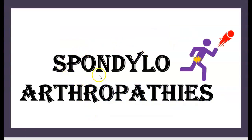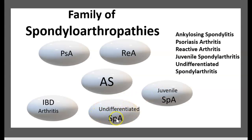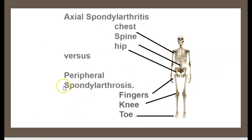Today's topic is spondyloarthropathies — a big family of conditions. Spondyloarthropathies include ankylosing spondylitis, psoriatic arthritis, reactive arthritis, juvenile spondyloarthritis, undifferentiated spondyloarthritis, and IBD arthritis. A second classification distinguishes between axial spondyloarthritis and peripheral spondyloarthritis.